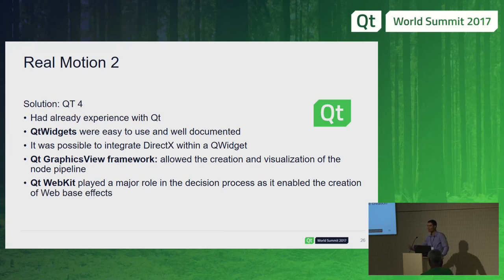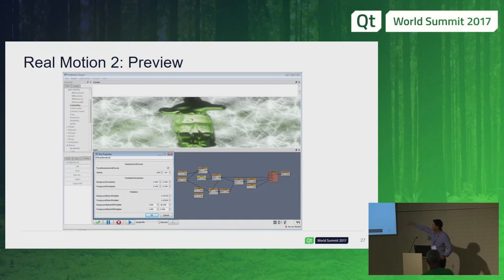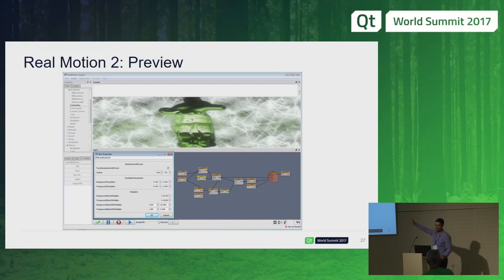Here you can also see a Twitter wall done with the web engine. Even if your installation is interactive, sometimes you want a Twitter wall or other web-based information, so in this kind of application you need some form of WebKit or web engine. The result: on the left you have the elements, you drag and drop them, put them together, double-click to configure, and you see the output on screen.